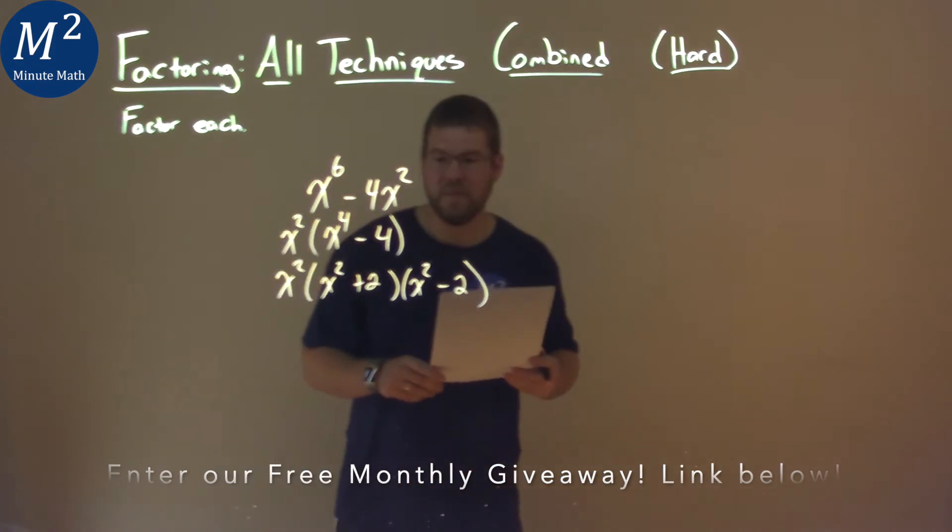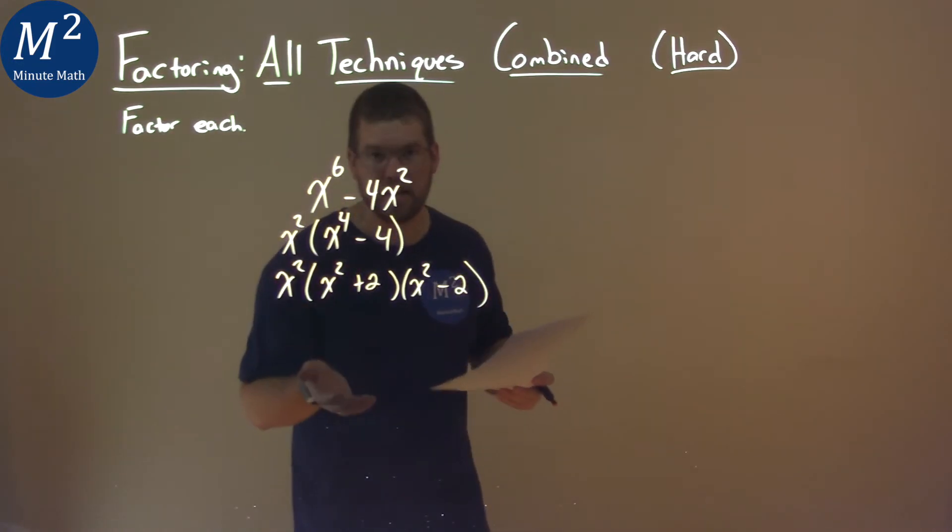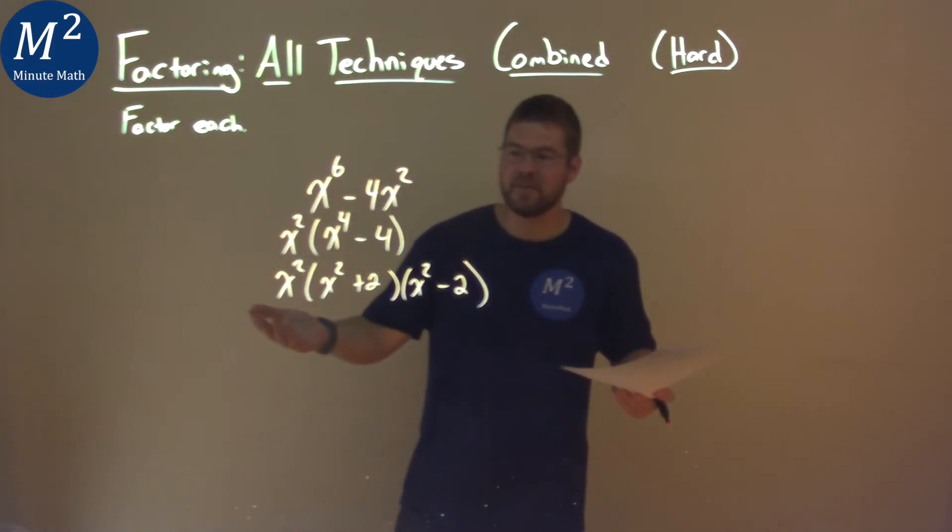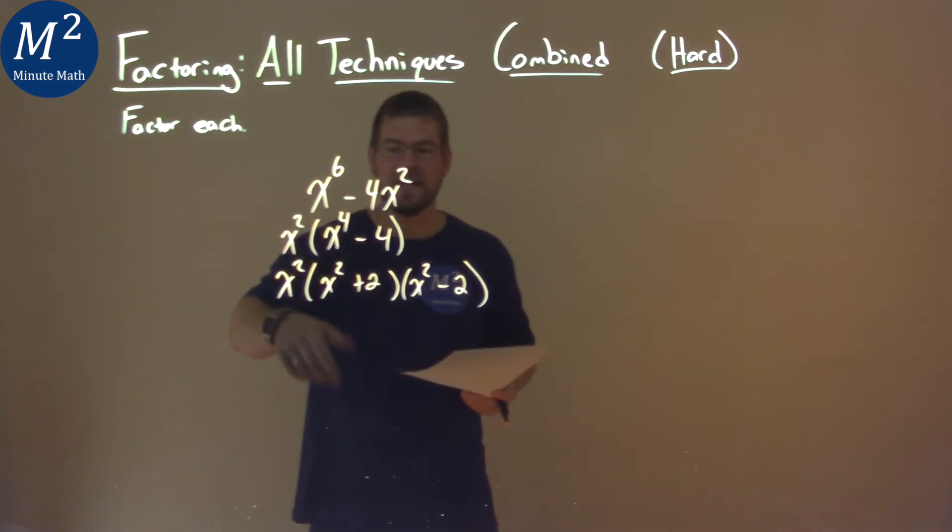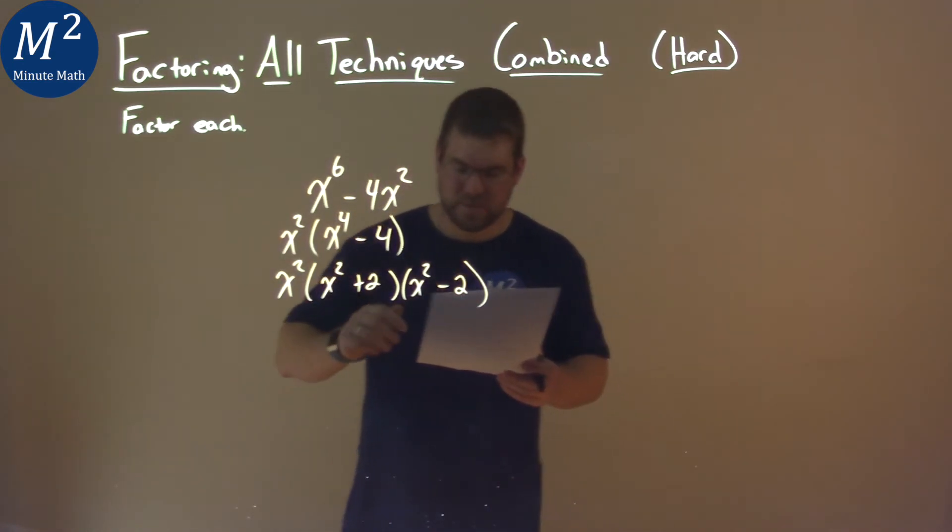And at this point, we actually are done. There's nothing more this can factor. So our final answer is x squared times x squared plus 2 times x squared minus 2.